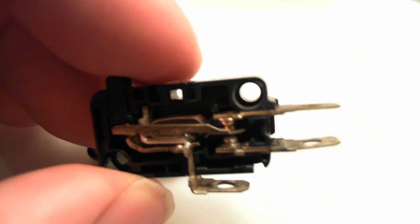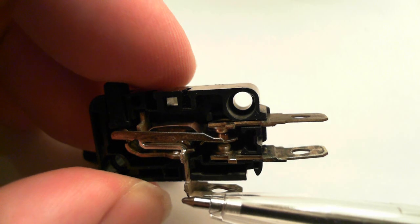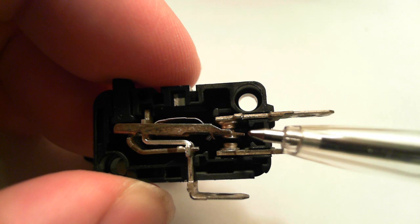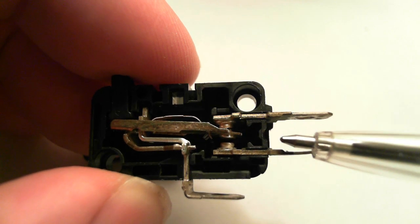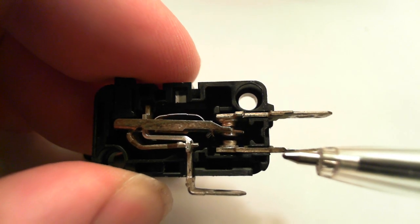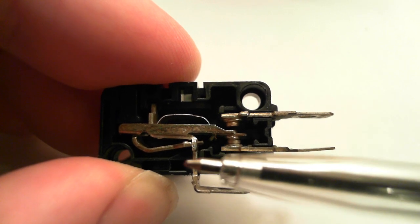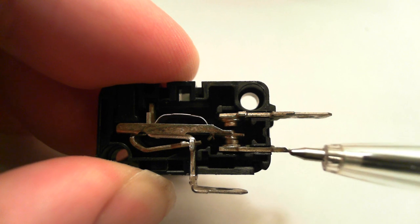So this one here is the commutator. This is normally closed, as you can see the contacts are closed, short circuit, and this one here is normally open. So when you push that down, the electrical path is through here, through here, and out through here.